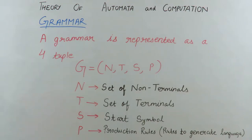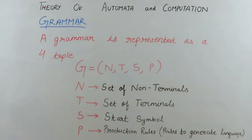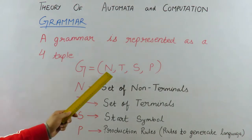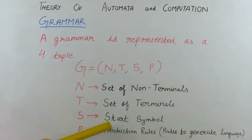We can define grammar as a four-tuple, meaning it has four components: N, T, S, and P. N means the set of all non-terminals. T means the set of terminals. The third important component is the start symbol, and the fourth one is production rules. Production rules are the rules that generate a language from this particular grammar.